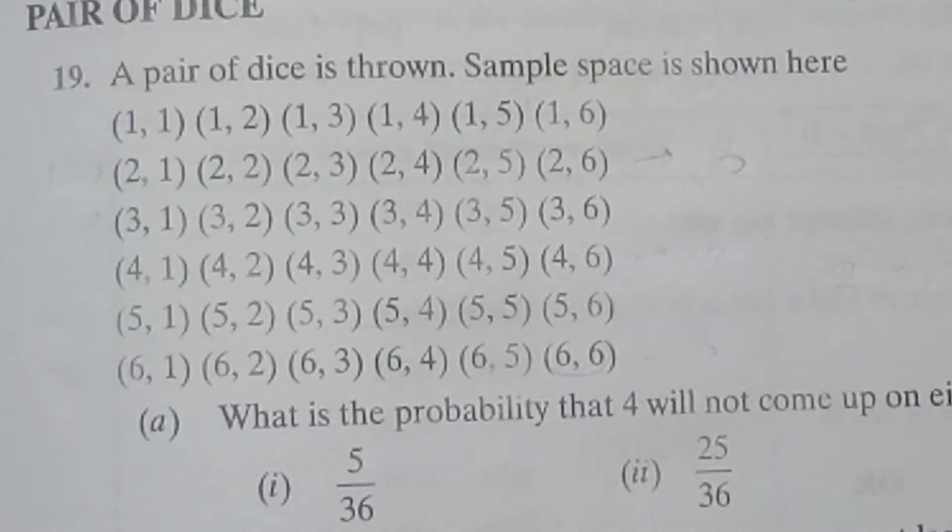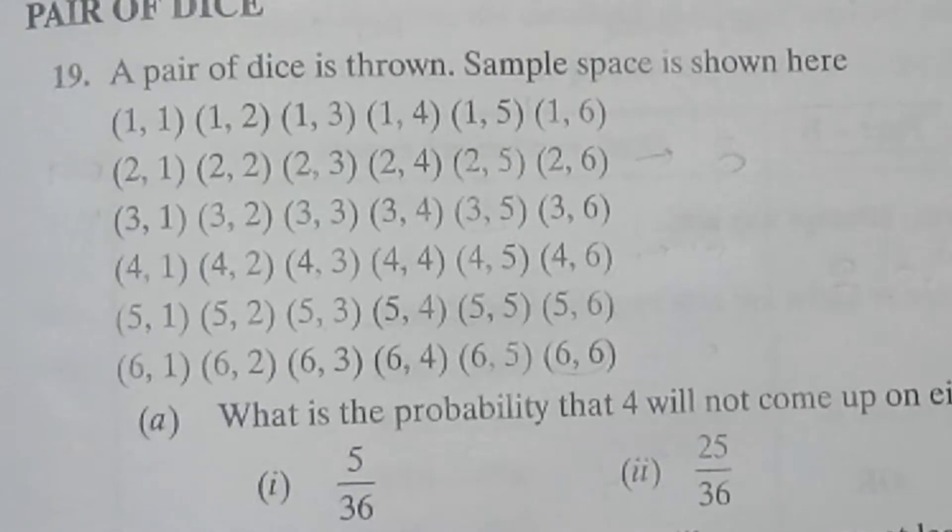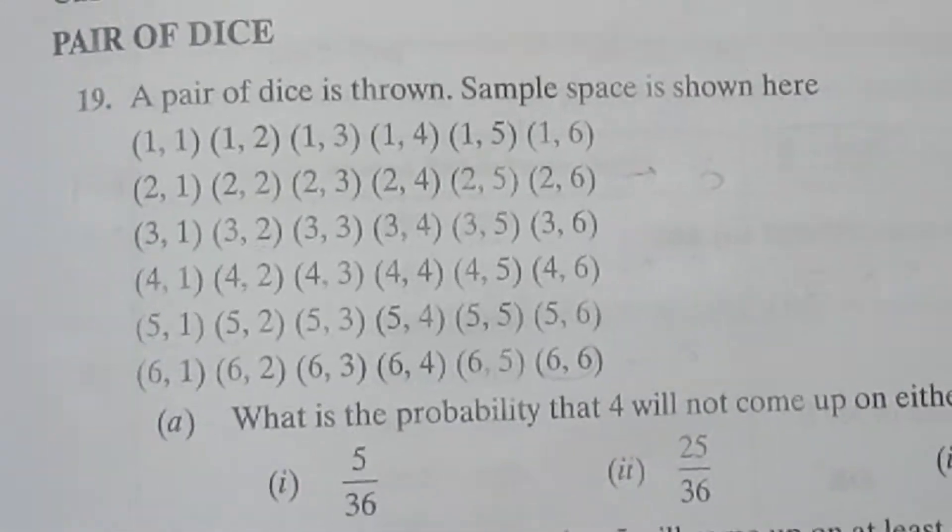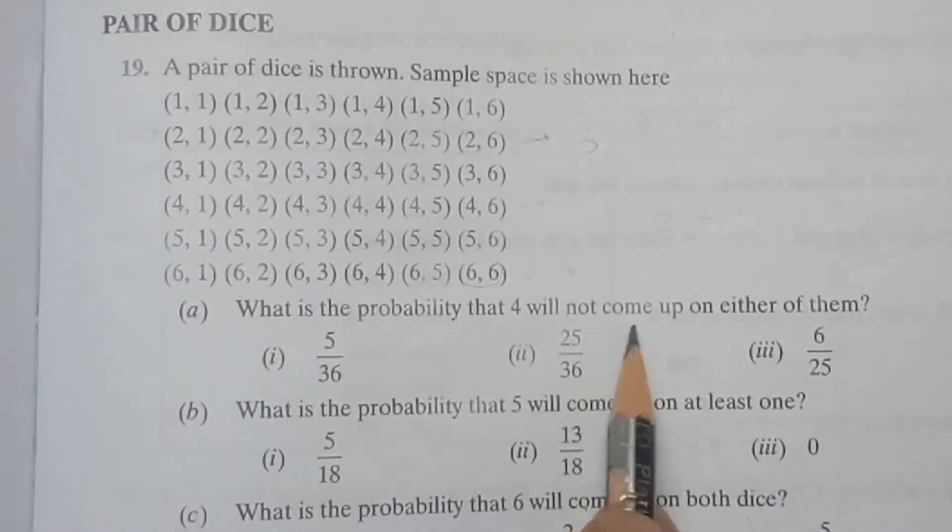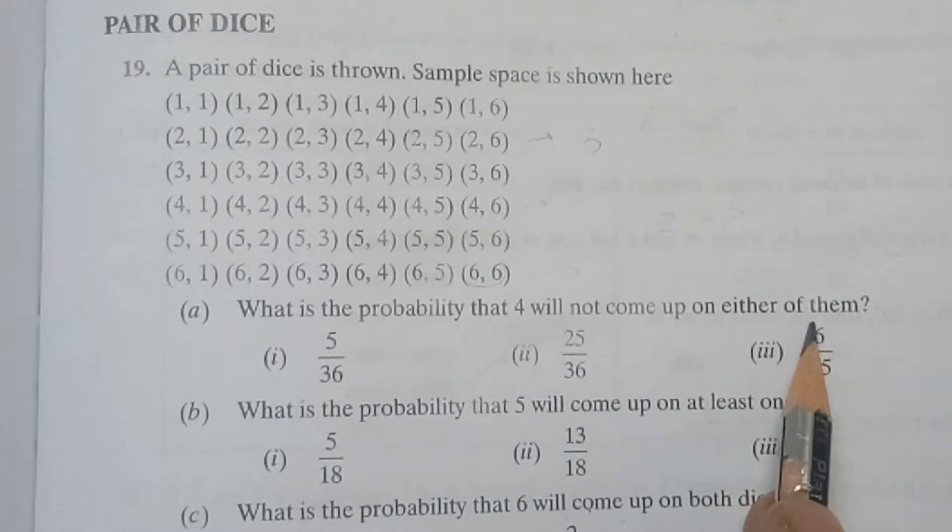Now there are some questions related to this. Let us discuss these questions. So the first question is: What is the probability that 4 will not come up on either of them?